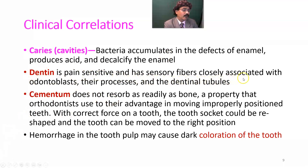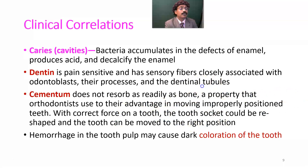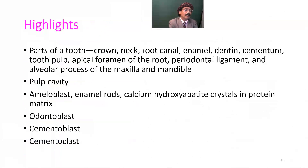Dentin is pain-sensitive and has sensitive fibers closely associated with odontoblasts, their processes, and the dentinal tubules. Cementum does not resorb as readily as bone — a property that orthodontists use to their advantage in moving improperly positioned teeth. With correct force on a tooth, the tooth socket can be reshaped and the tooth moved to the correct position. Hemorrhage in the pulp may cause discoloration of the teeth but does not necessarily require root canal surgery, as many cases resolve on their own.